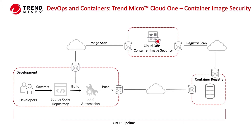Trend Micro's container image security can scan container images and registries for malware, vulnerabilities, secrets, and compliance. By completely integrating into your CI-CD pipeline, your development team will get early indication of findings. This will allow them to rectify any issues before the containers are pushed to production, and provide the security team with peace of mind that running containers have been scanned.